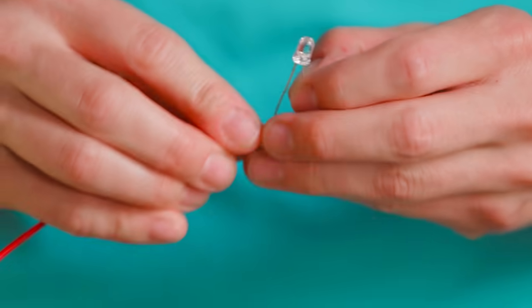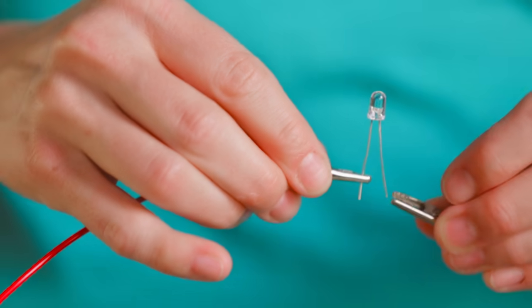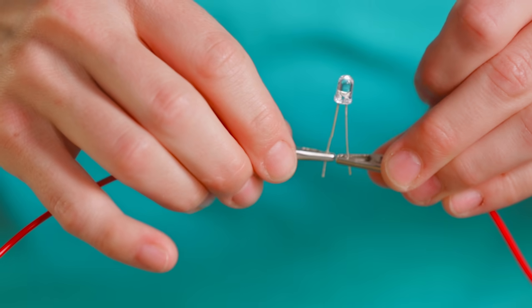And when you're ready to light your LED, fasten the copper side alligator clip to the longer, positive end of the LED, and the zinc side to the shorter, negative end.